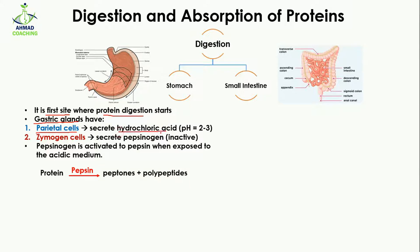Because of this hydrochloric acid, the pH value of the stomach is 2 to 3. The other cells are zymogen cells. The zymogen cells secrete pepsinogen, which is an inactive enzyme. This pepsinogen is transferred from the zymogen cells to the central cavity of the stomach, where it is activated to pepsin — an active enzyme — when exposed to the acidic medium of pH 2 to 3.